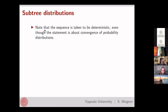It's important to note that the sequence of trees considered can be deterministic — even though I'm stating something about probability distributions. With each tree I associate a probability distribution, but the trees themselves might form a deterministic sequence, like the sequence of stars. So the sequence need not be a sequence of random trees.